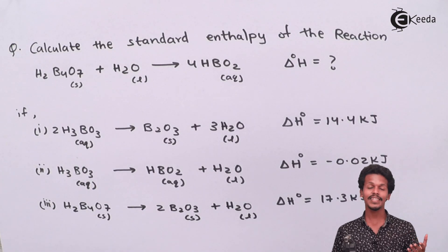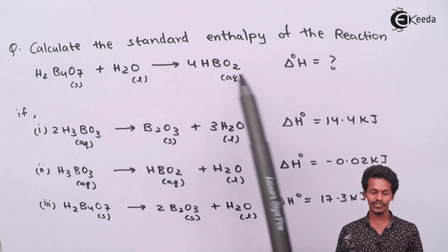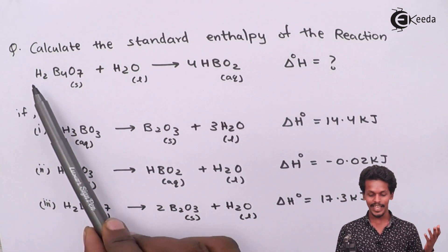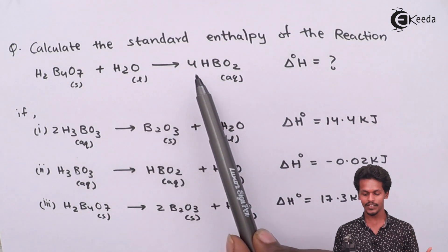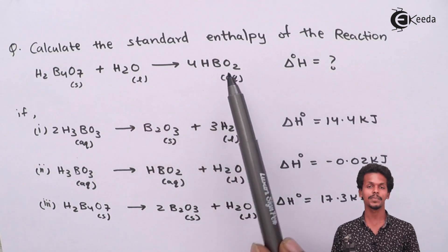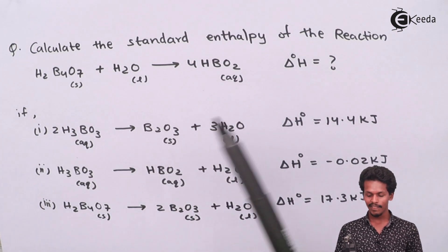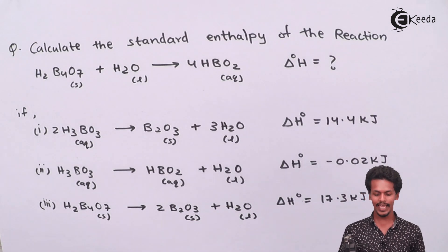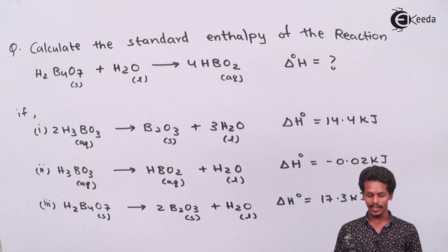So friends, this is the equation that we have to work with, and we have to calculate the standard enthalpy of this reaction — that is when H₂B₄O₇ plus H₂O gives us four times HBO₂. This is what we have to calculate, and for reference we have three reactions in front of us.